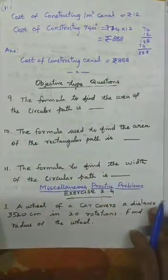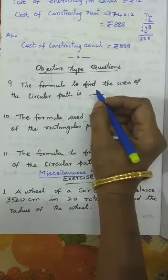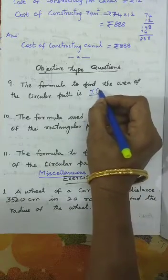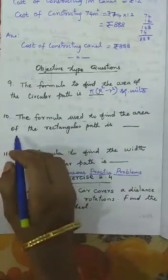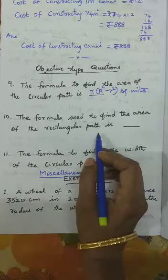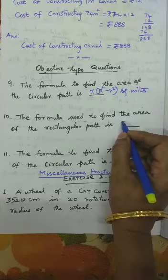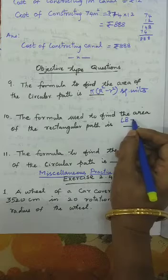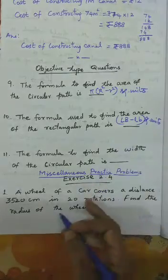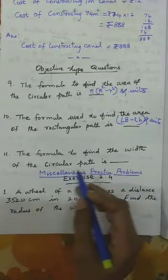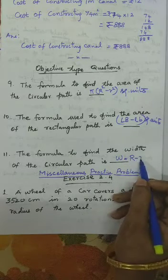Objective type questions review: The formula to find the area of a circular path is π(R² − r²) square units. The formula for the area of a rectangular path is (capital L × capital B) − (small l × small b) square units. The width of a circular path is W = R − r.